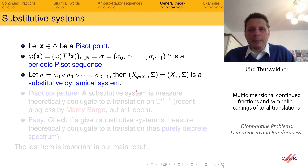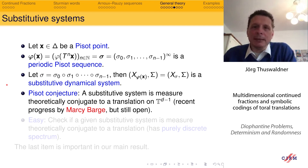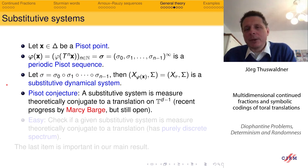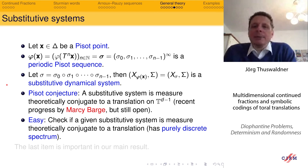For substitutive dynamical systems, they are well-studied but not everything is clear. The biggest open problem is the Pisot conjecture, which states that the substitutive system is measurably conjugate to a translation on the (d−1)-dimensional torus, where d is the number of letters. There is recent progress by Berthé and co-authors but this is still open. What is important for us: it is easy to check for a single substitutive system whether it is measurably conjugate to a translation or not.